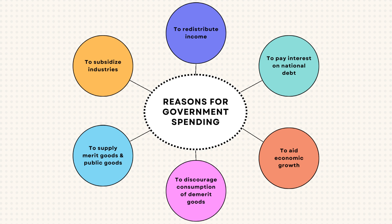Why exactly does a government spend? A government spends to redistribute income from the rich to the poor. It spends to pay interest on its national debt. It spends to aid economic growth, to discourage the consumption of demerit goods which have a negative impact on the economy. It also spends to supply merit goods and public goods to its citizens, and it spends to subsidize industry.